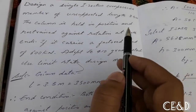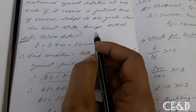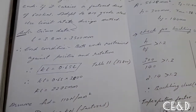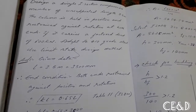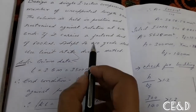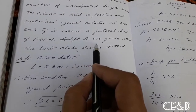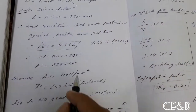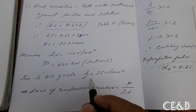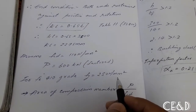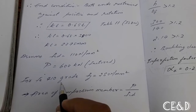The factored load P = 600 kN. The grade of steel is Fe410. For Fe410, FY = 250 N/mm² — these are constant values for Fe410 grade steel.